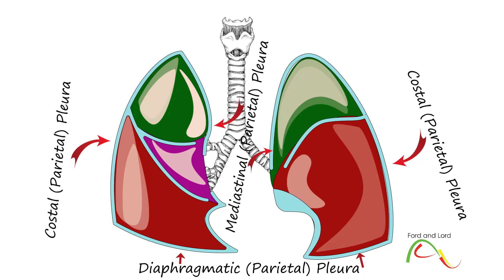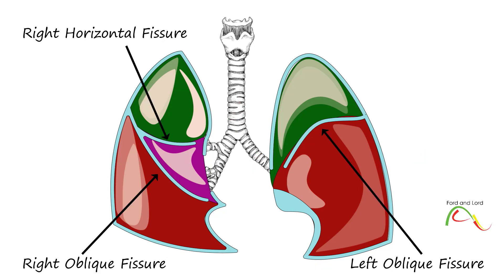The visceral pleura does not only cover the lung, but also dips into the lungs to make fissures. Fissures separate the lobes of the lungs, and each fissure is made up of a folded double layer of the visceral pleura. There are two fissures in the right lung separating three lobes, and there is one fissure in the left lung separating two lobes.